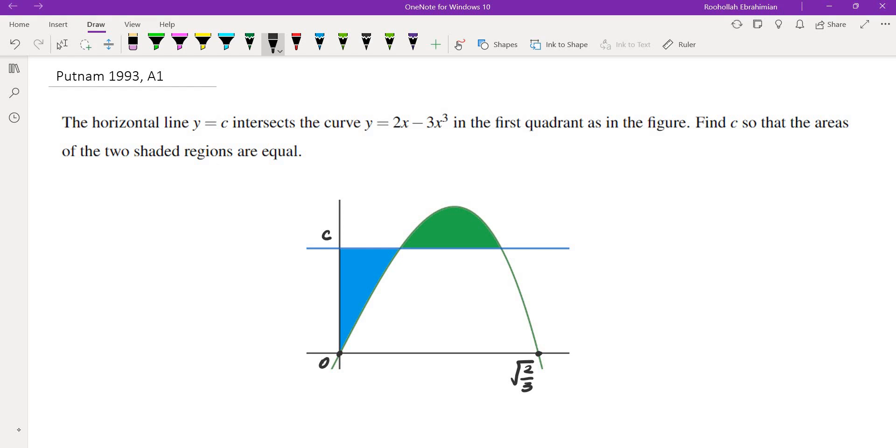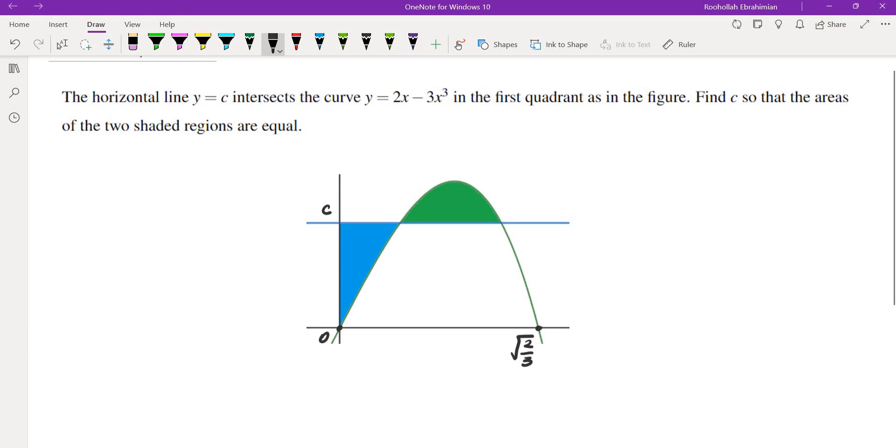In the first quadrant as in the figure, find c so that the areas of the two shaded regions are equal. So let's start looking at the formula for the areas, set them equal, and then see what c is.